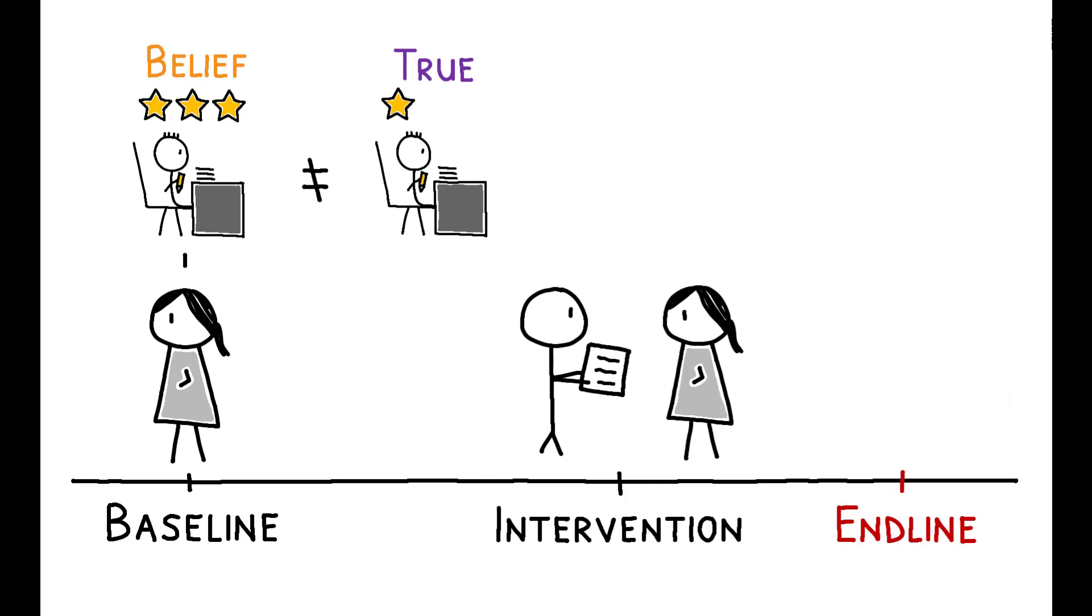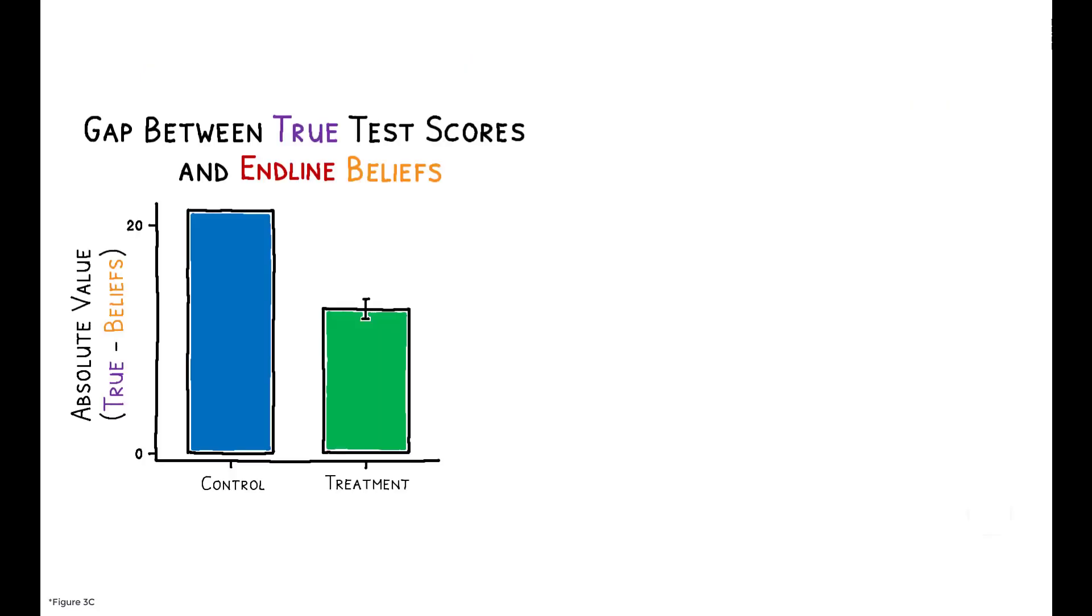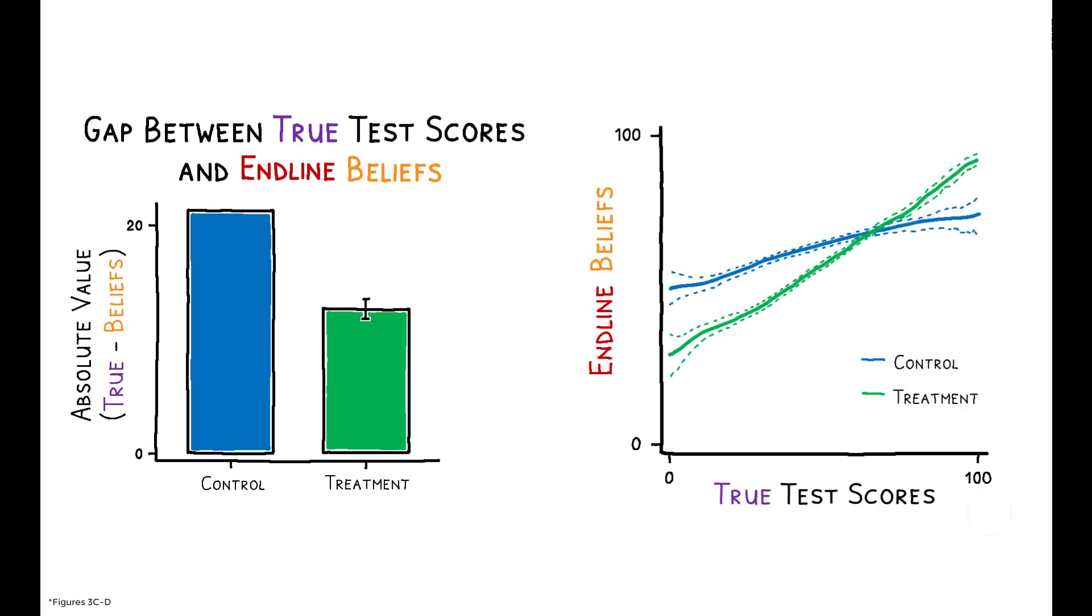At the end of the experiment, parents were asked how well they thought their children would perform on a hypothetical test taken that same day. While the gap between control parents' endline beliefs and their child's last-term scores remained comparable to the gap observed in the baseline survey, the discrepancy was cut nearly in half for treatment parents, and their beliefs were more strongly correlated with true performance.